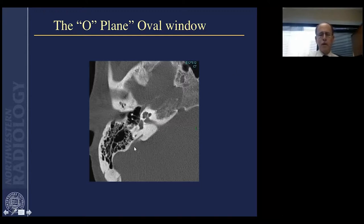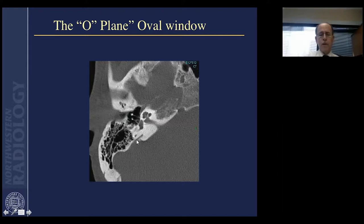Just to point out a structure I'm not going to talk about too much today: this is the vestibular aqueduct that communicates between the endolymphatic sac, which is a soft tissue structure that sits along the posterior petrous slope, and the vestibule more anteriorly.